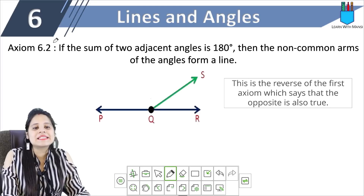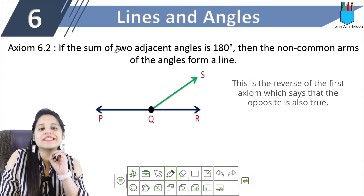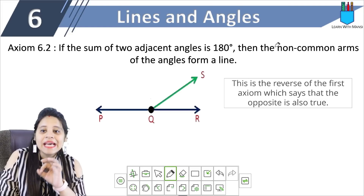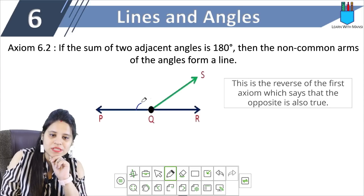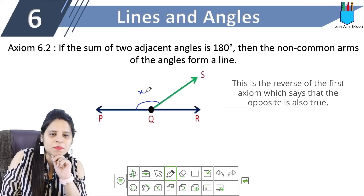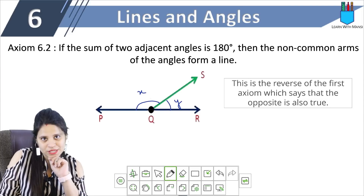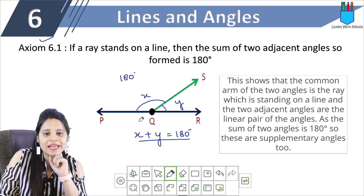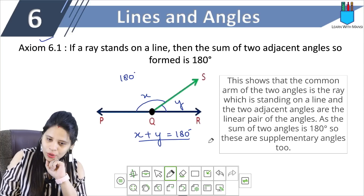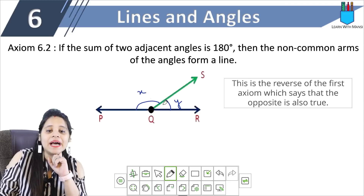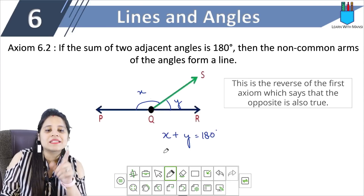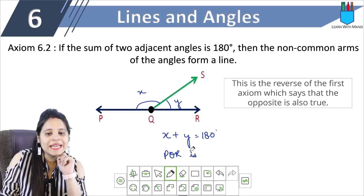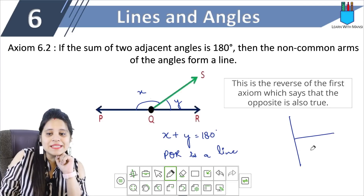Next is Axiom 6.2: if the sum of two adjacent angles is 180 degrees, then the non-common arms of the angles form a line. Let's suppose the same scenario. If you read it, it's the same thing but a little opposite. First I said that if it's a straight line and a ray passes, then the sum is 180 degrees. Now, if you are given to prove that x plus y is 180 degrees, then you can say that P, Q, R is a line.